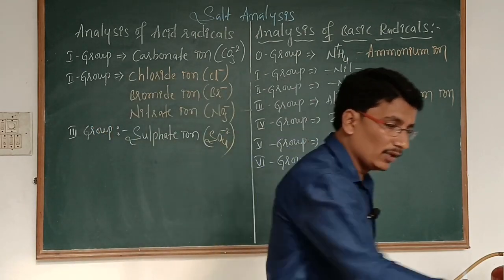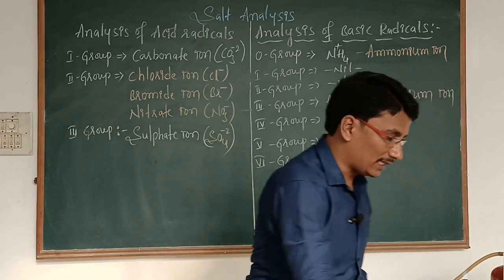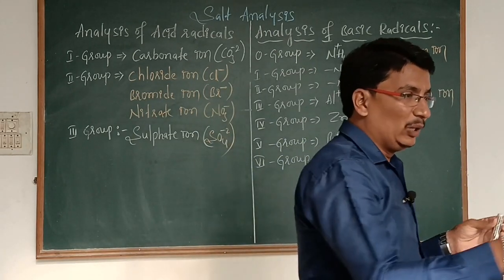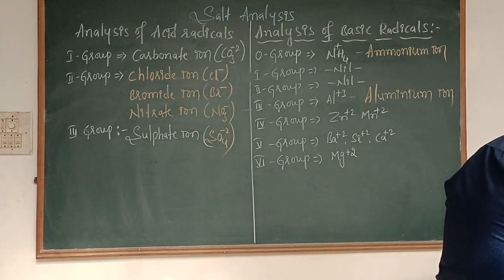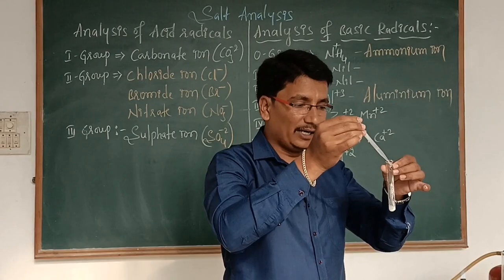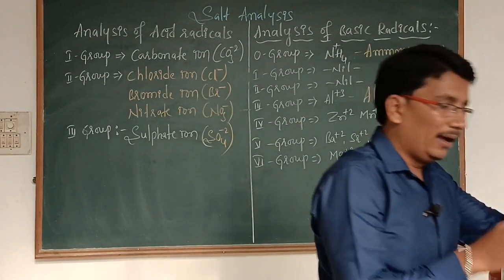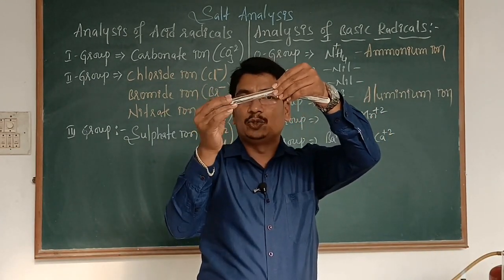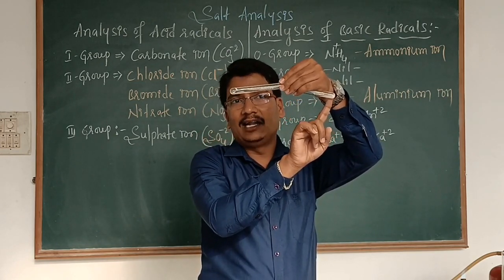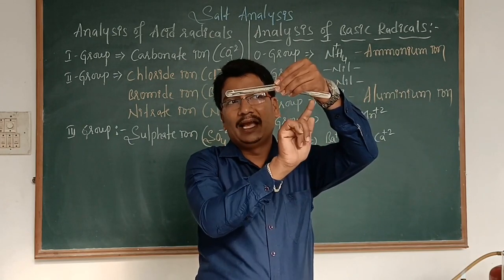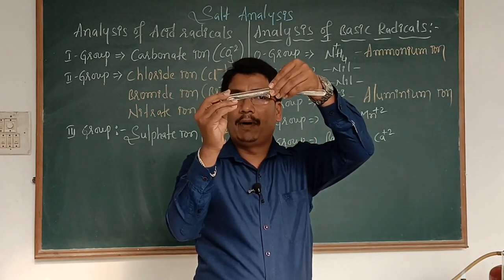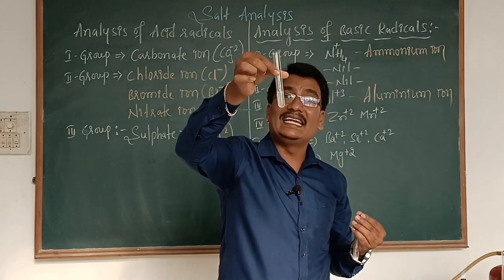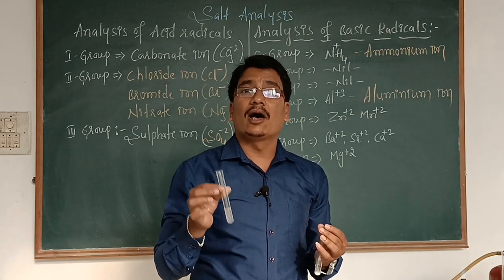For the first group test, we have to take salt plus dilute HCl or H₂O in a test tube. Brisk effervescence is formed. Those brisk effervescences are forced through a test tube containing lime water. If the lime water turns milky, it indicates the presence of carbonate ion.